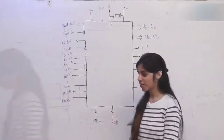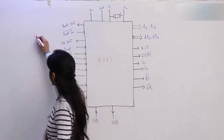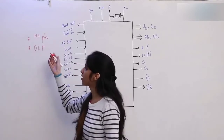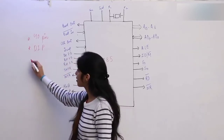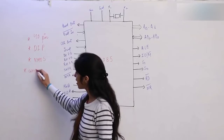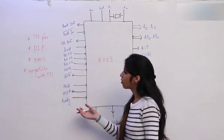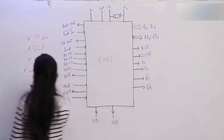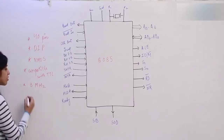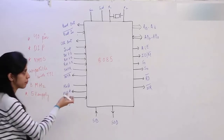Now let's look at the pin diagram — the architecture and pin diagram of the 8085 microprocessor. Basically this is a 40-pin IC in a Dual Inline Package (DIP), meaning it has pins on both sides of the IC. It works on NMOS technology, compatible with TTL logic. It uses a 3 MHz clock and a 5-volt supply. These are some basics about the 8085 microprocessor.